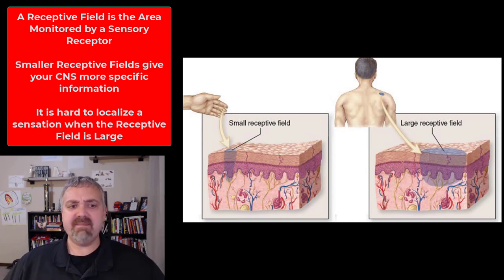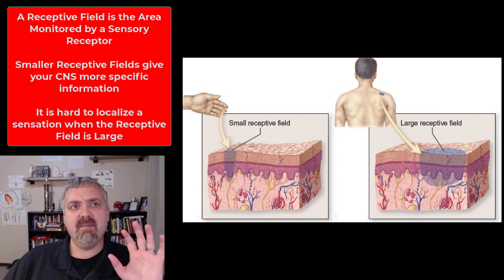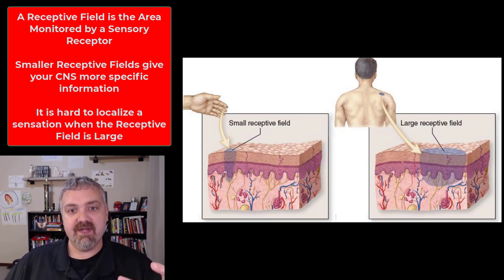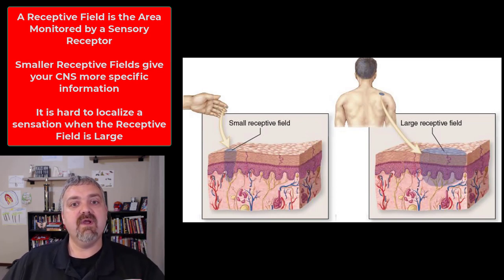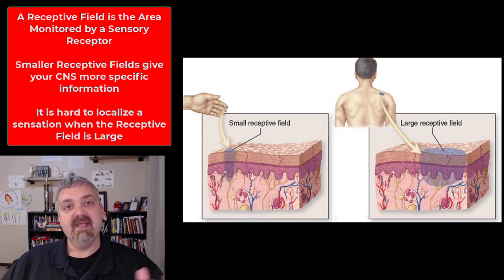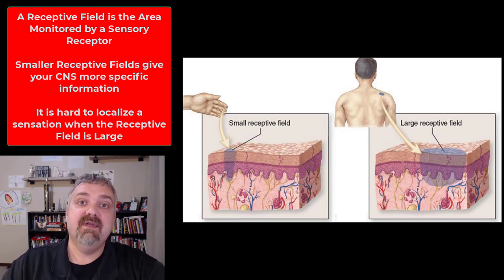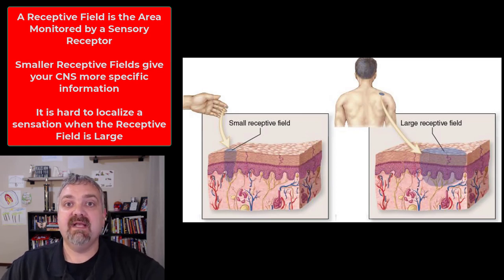These receptive fields can monitor all sorts of things, and that's the important takeaway here. Different types of receptors tell your brain what's going on, and receptive fields — small versus large — are very important. In the next video, we'll talk about the different types of sensations they actually send to your brain. I hope this helps. Have a wonderful day.